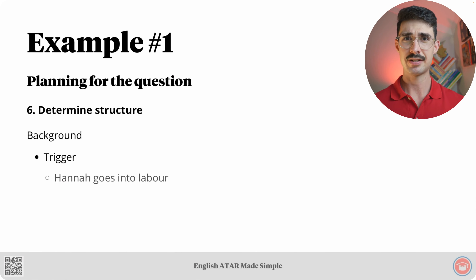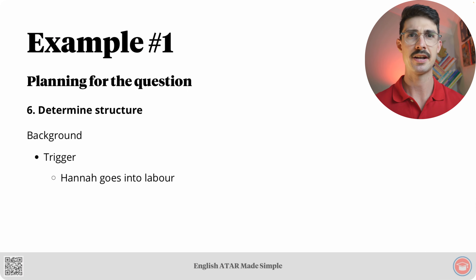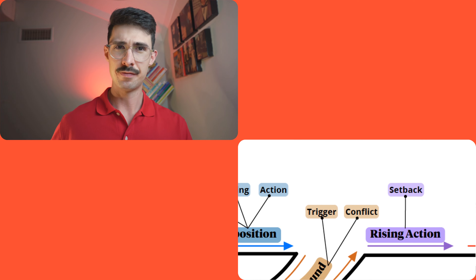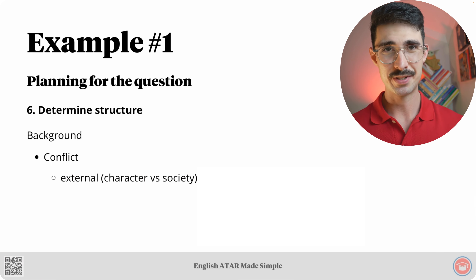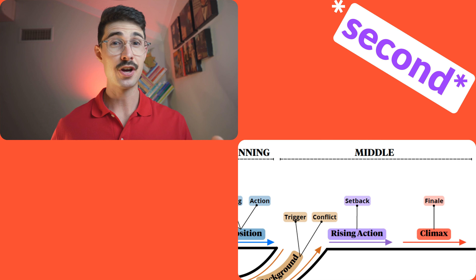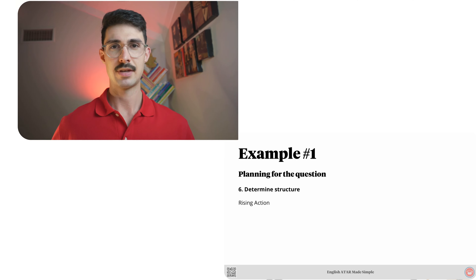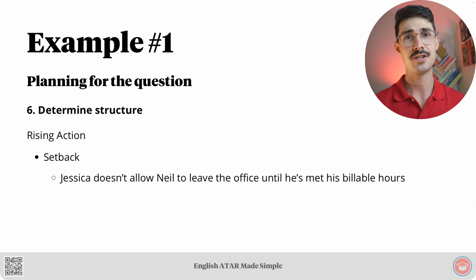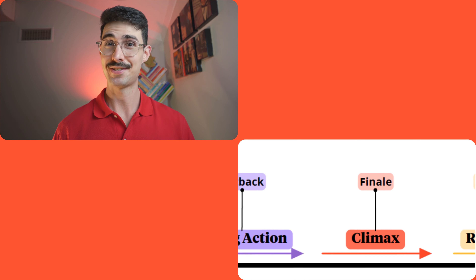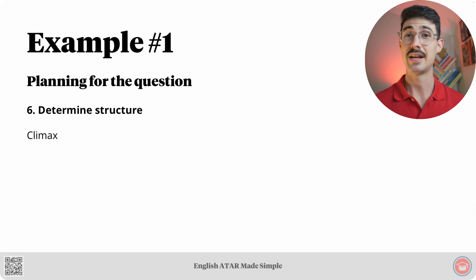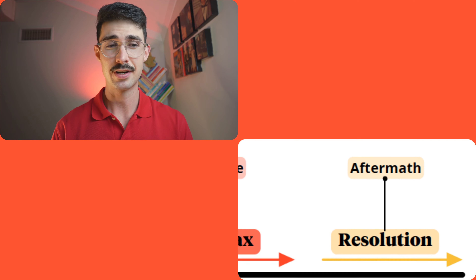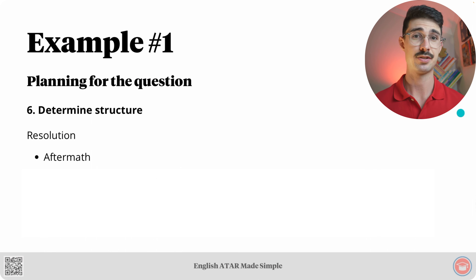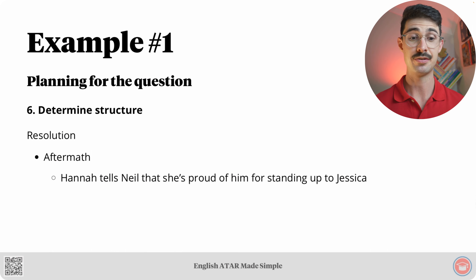For the background section, the trigger is that Hannah, his wife, goes into labour. The type of conflict is external — specifically character versus society, and more specifically Neil versus society's adherence to time. For the rising action, the setback is Jessica not allowing Neil to leave the office until he's met his billable hours. For the climax, the finale is Neil standing up to Jessica. For the resolution, the aftermath is Hannah telling Neil she's proud of him for standing up to Jessica.